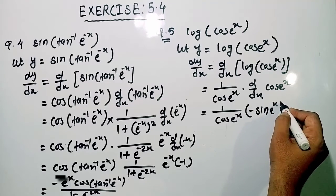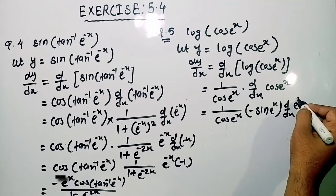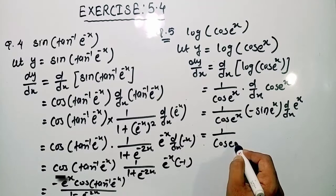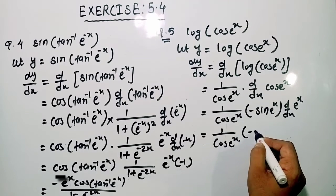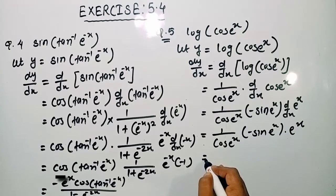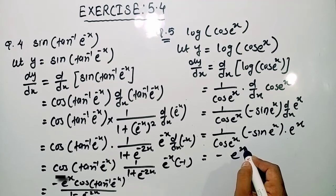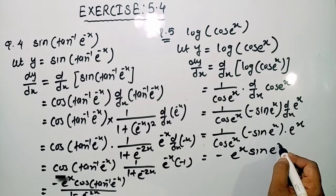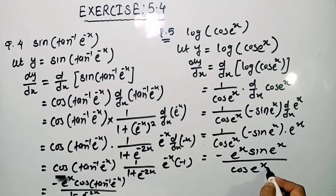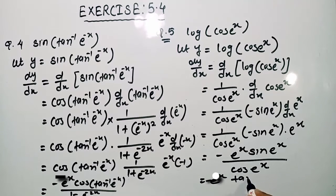Differentiation of cos e raised to the power x will be minus sin e raised to the power x, now differentiation of e raised to the power x will be e raised to the power x. So here we are getting 1 upon cos e raised to the power x into minus sin e raised to the power x into e raised to the power x. In the simplest form we can write minus e raised to the power x multiplied by sin e raised to the power x divided by cos e raised to the power x, which gives minus e raised to the power x tan e raised to the power x.